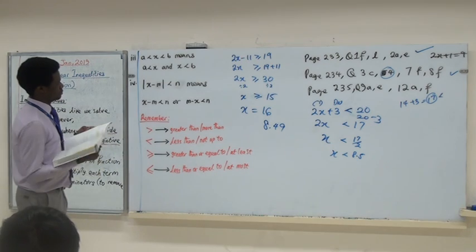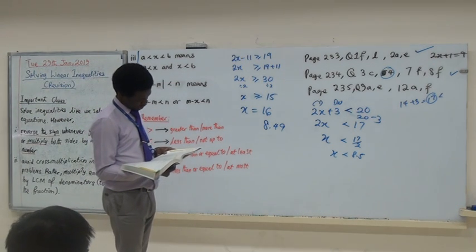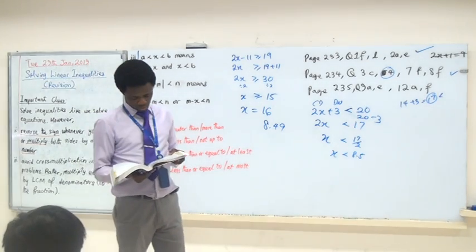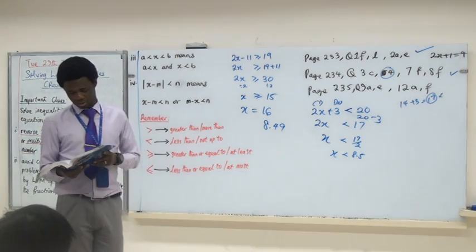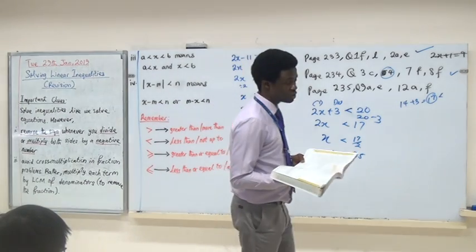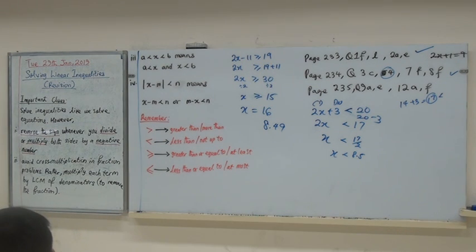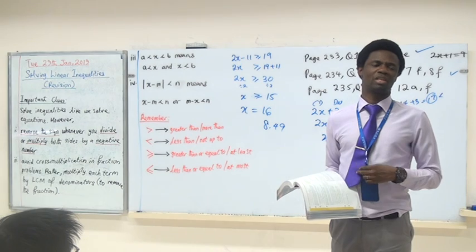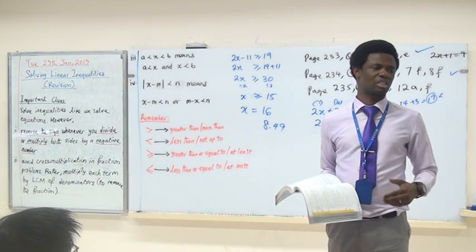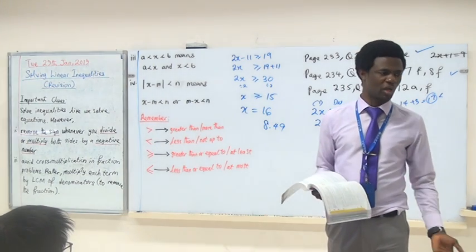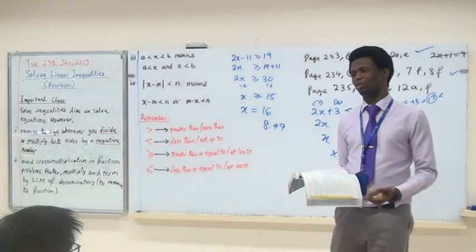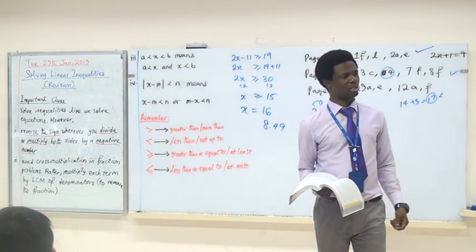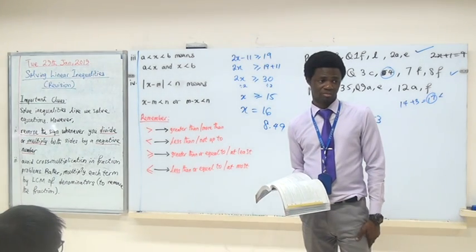The next question is 7F. You open the bracket and get 8X minus 2 on one side, and 3X plus 12 on the other. What did you get eventually? X is less than or equal to 12 divided by 5, which is 2.8. If the decimal is not terminating, I would suggest you give it as a fraction. But if it terminates like 0.25 or 0.75, both are acceptable. If you're dealing with money, leave it in two decimal places.